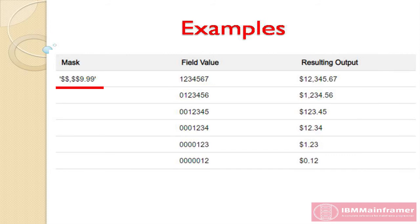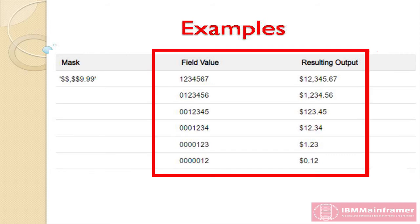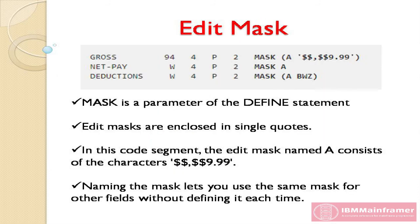Commas and decimal points are printed just as indicated. In this example, you can see that commas are suppressed along with high-order zeros for numbers less than 1000. When the same mask is to be used on more than one field, you can avoid coding the mask more than once by naming it, and then specifying only the name on subsequent fields.